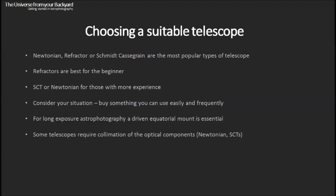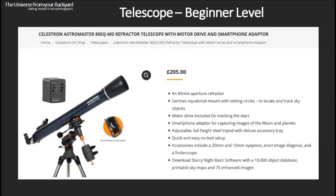For long exposure astrophotography — particularly for those doing exposures of galaxies and nebulae — you will need a driven equatorial mount. This is a really essential piece of equipment for this kind of work. With Schmidt-Cassegrains and Newtonians, some telescopes also require collimation of the optical components, which is extremely important for them to perform to their true potential.